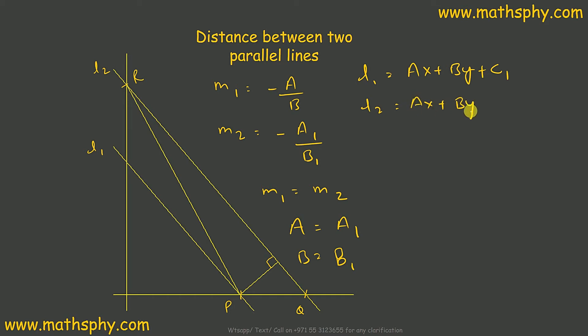So l1 is ax plus by plus c1 equals 0, and l2 is ax plus by plus c2 equals 0. Now this is the x-axis, this is the y-axis, and this is the origin, I take it as O.